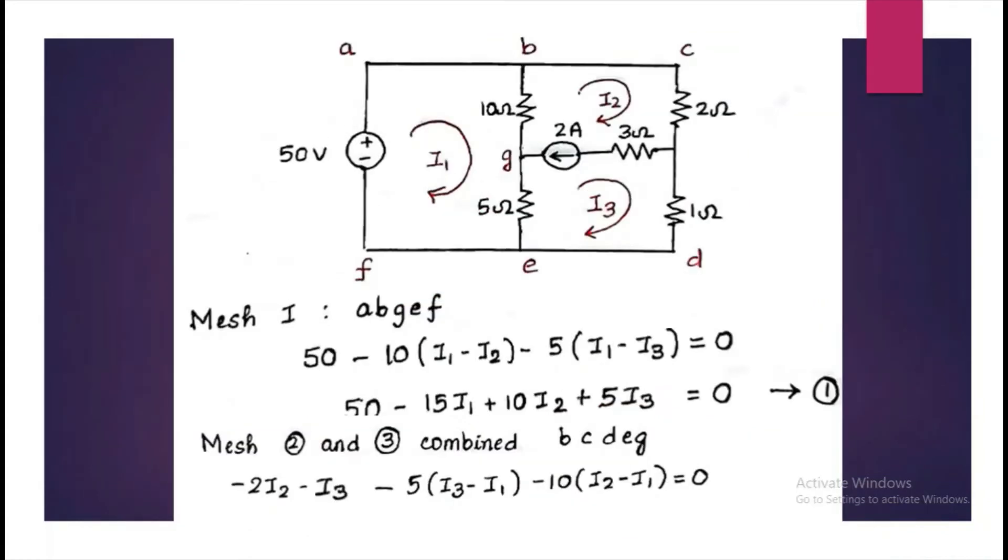For mesh 1, that is a-b-g-e-f, the equation is 50 minus 10(i1 minus i2) minus 5(i1 minus i3) is equal to 0.